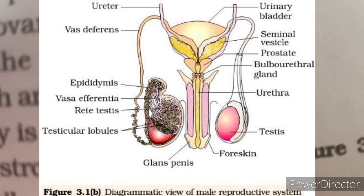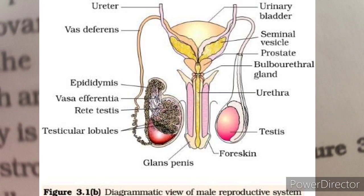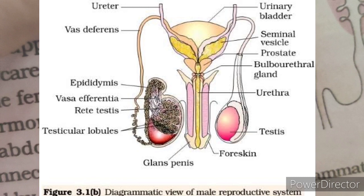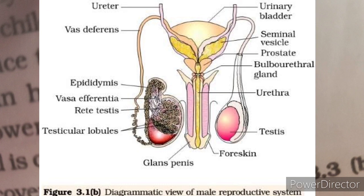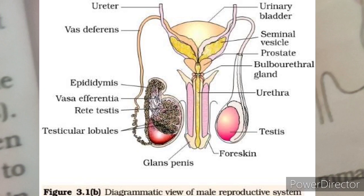The penis is the male external genitalia. It is made up of special tissues that help in erection of the penis, which facilitates insemination — that is the delivery of the gamete inside the female body. The enlarged end of the penis is called the glans penis and is covered by a loose fold of skin called the foreskin.